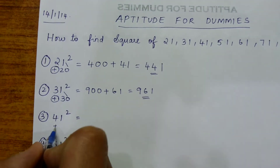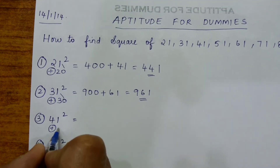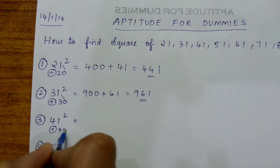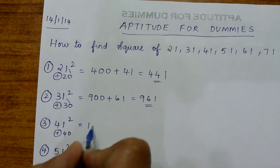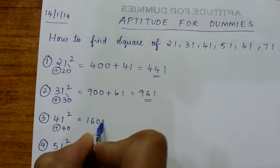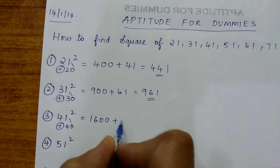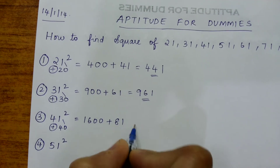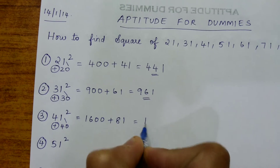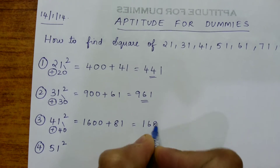41 square is one more than the perfect square 40. 40 square is 1600, plus 40 plus 41, which gives 81, implying 1681.